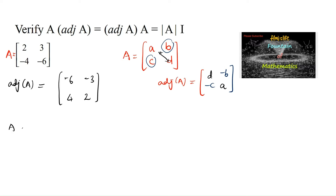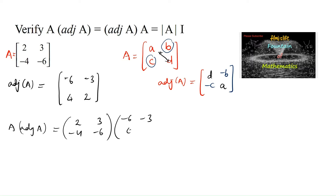Now, A times adjoint of A equals [[2, 3], [-4, -6]] multiplied by [[-6, -3], [4, 2]]. For the first row, first column: 2×(-6) = -12, plus 3×4 = 12. For the first row, second column: 2×(-3) = -6, plus 3×2 = +6.